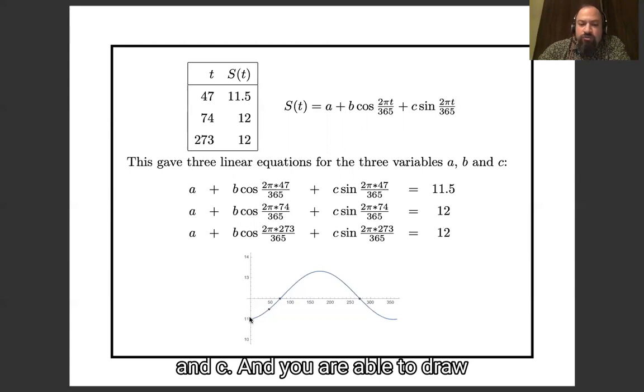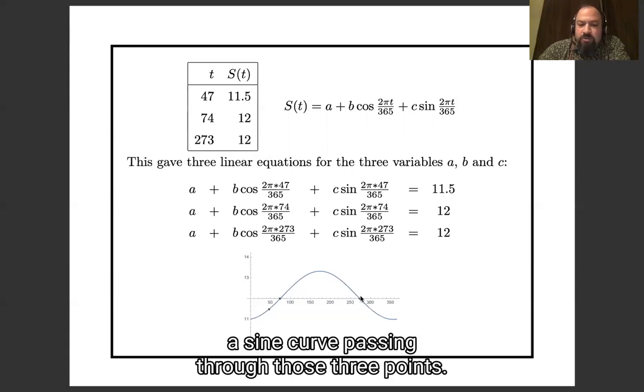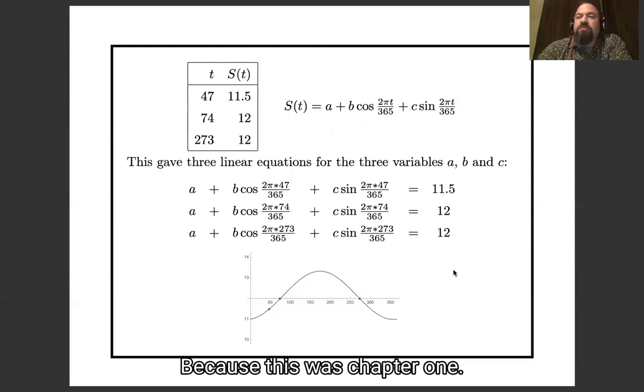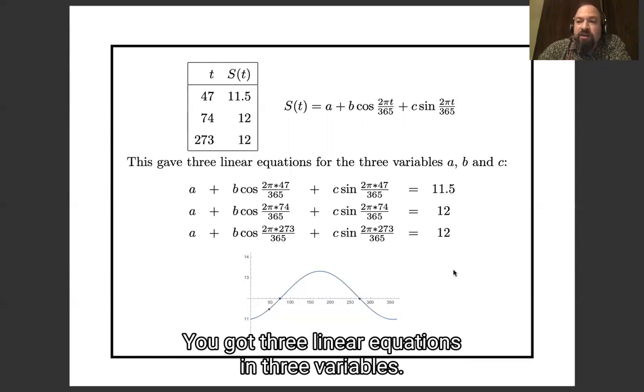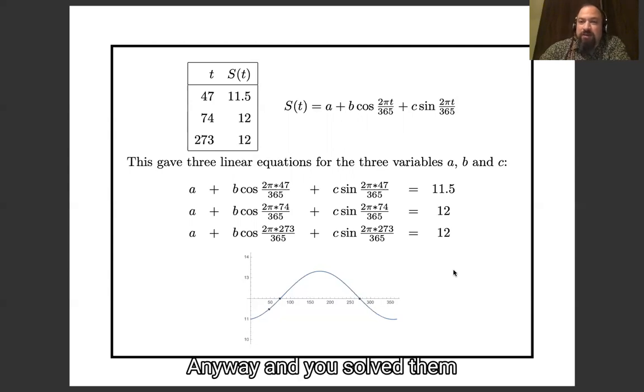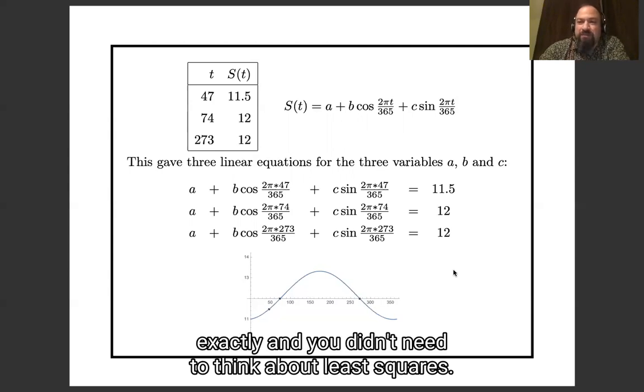And you were able to draw a sine curve passing through those three points. Because this was chapter one, you got three linear equations in three variables and you solved them exactly, and you didn't need to think about least squares.